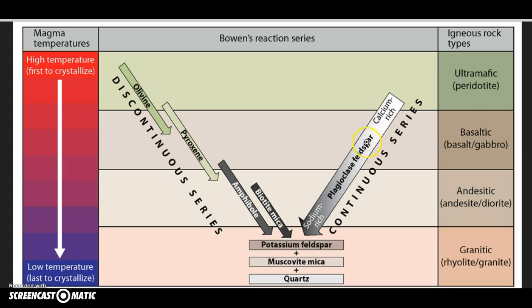If we look, we're going to expect to find plagioclase feldspar, we might see a little bit of amphibole, we'll see a lot of pyroxene, and a little bit of olivine. Peridotites are going to be mostly olivine with a little bit of pyroxene and maybe some plagioclase feldspar.